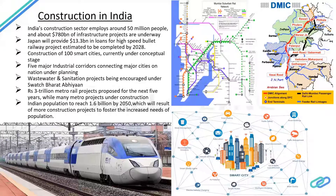Now let's focus on the construction sector in India, which is quite optimistic and emerging. The construction sector in India employs around 50 million people overall, and there are about $70–80 billion worth of infrastructure projects underway. These projects include metro projects, smart cities, bullet train projects, industrial corridors, and railway projects.